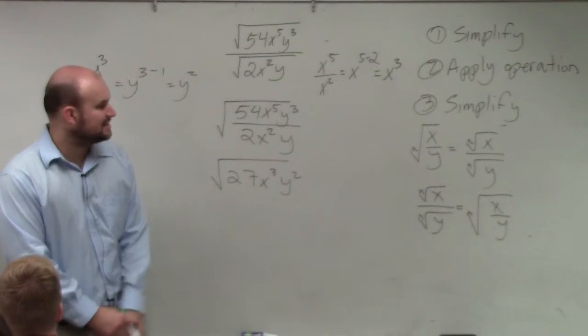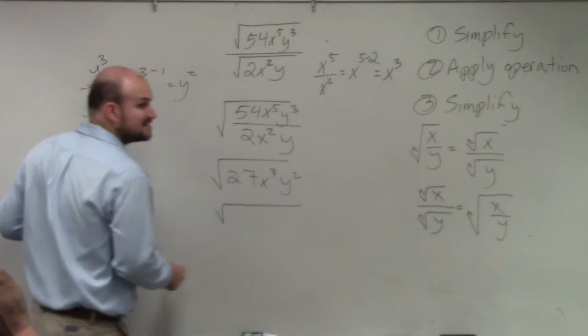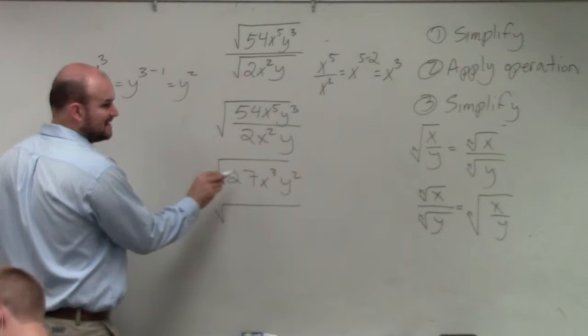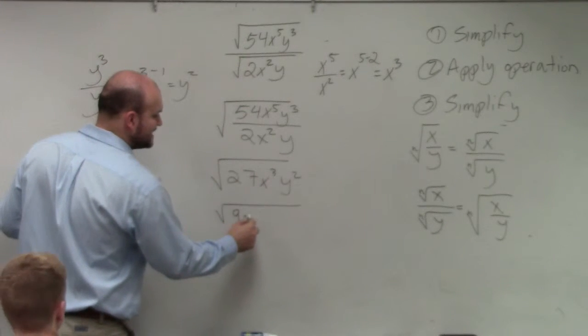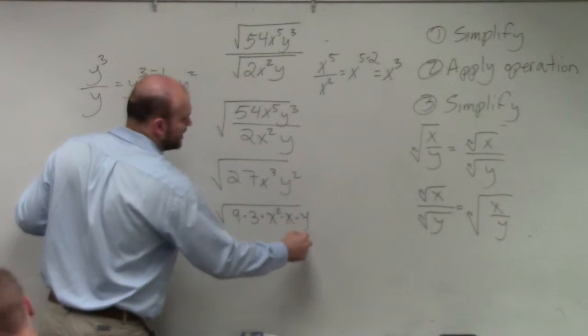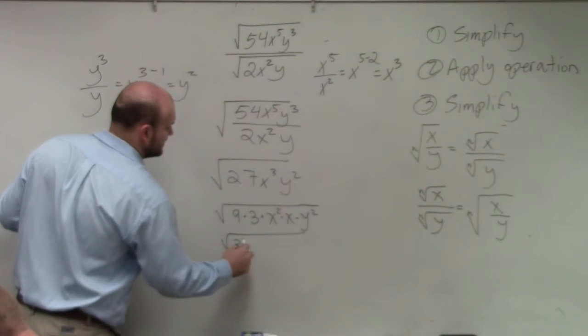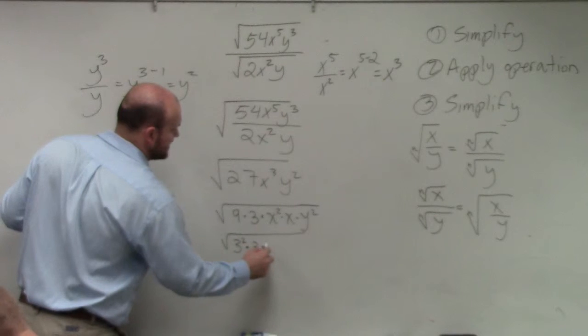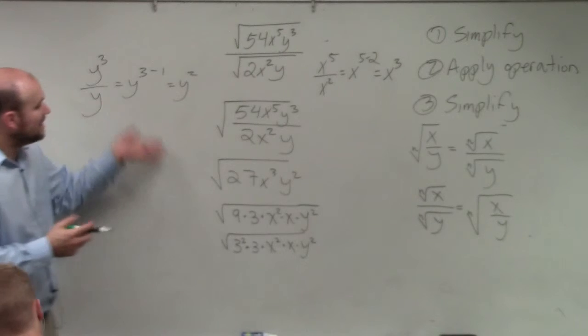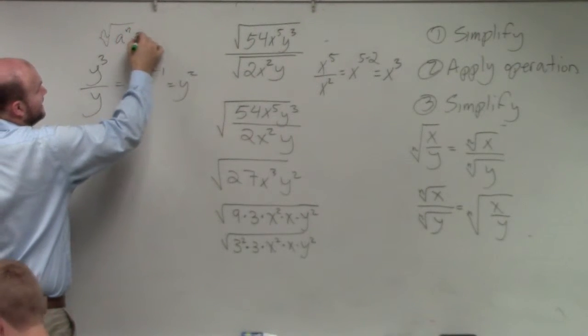So again, now I want to see, can I break this up into square terms? And yes, of course you can. Again, I'll do this again slow for you guys, because we're going to start picking this up. But can I break, 27 is not a squared number, but I can break that up into 9 times 3. I can break up x cubed as x squared times x. And then I already have y squared. Break that up into 3 squared times 3 times x squared times x times y squared. Now we just apply our identity element. Any element where we have the nth root of a to the n equals a.